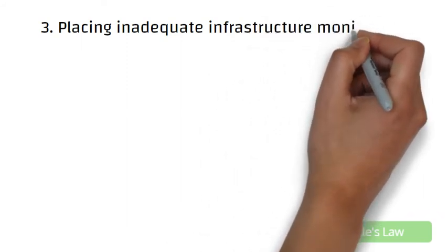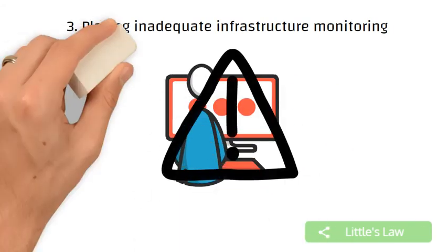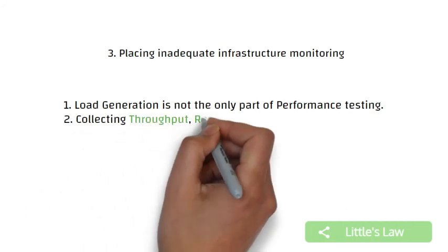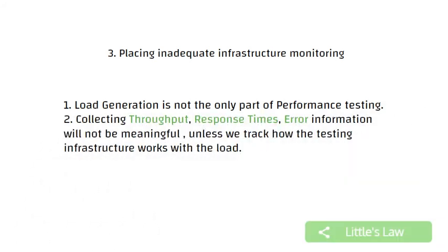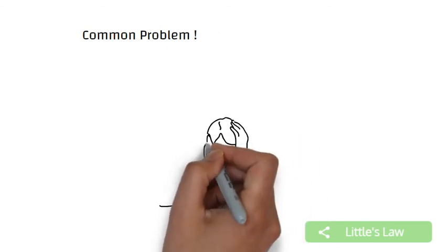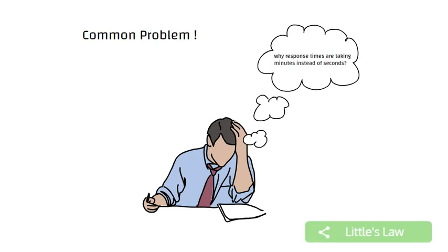Let's now move to the third challenge: setting up inadequate infrastructure monitoring. Load generation is not the only part of a performance testing scenario. Collecting throughput, response times, and error information will not be meaningful unless we track how the testing infrastructure behaves under load. It's a common problem — I have heard many testers ask why their response times are taking minutes instead of seconds. The problem lies either in the load generation or the target application infrastructure.